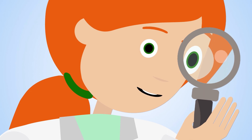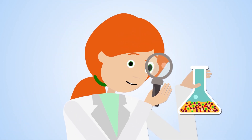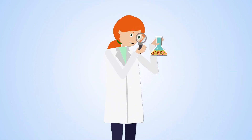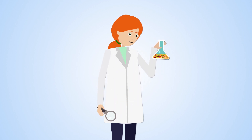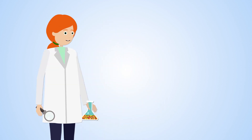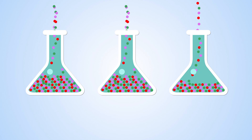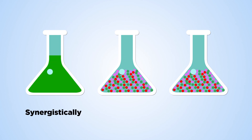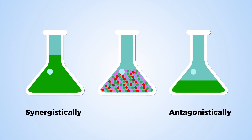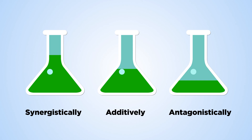Fortunately, it's possible to assess the risk posed by these mixtures. But first, researchers have to figure out if and how the chemicals interact with each other. This interaction could be synergistically, where chemicals amplify each other's effect; antagonistically, where they inhibit each other; or most commonly, additively, where instead of interacting, similar chemicals act like extra doses of each other.